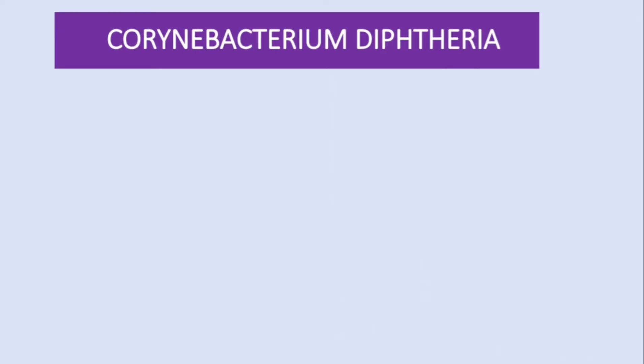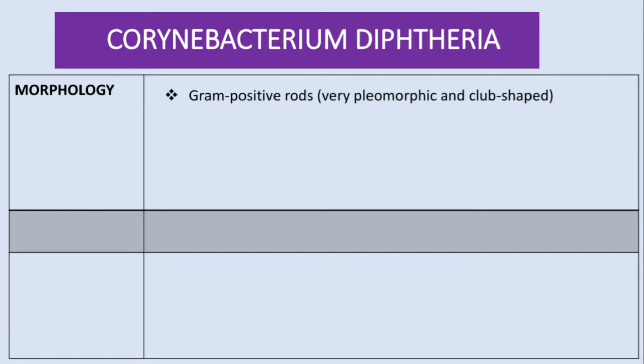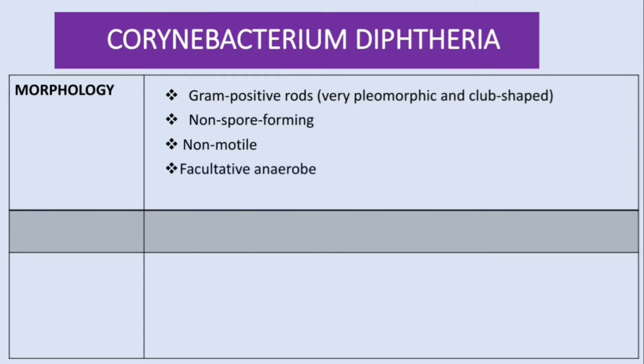Hello and welcome to Basic Medical Sciences. In this video we're going to talk about Corynebacterium diphtheriae, the causative agent of diphtheria. Starting with morphology: this bacteria is a gram-positive rod, pleomorphic and club-shaped. It is non-spore forming and non-motile, and it is facultative anaerobic.